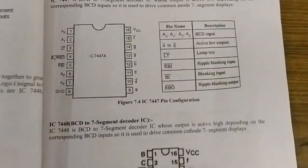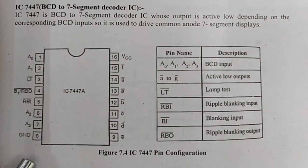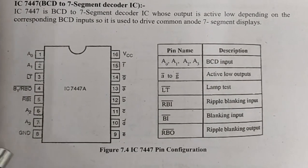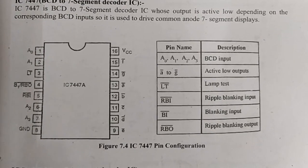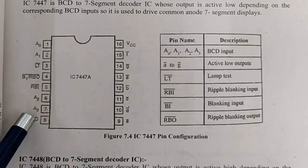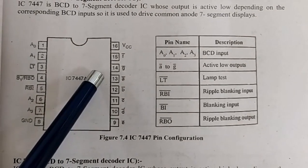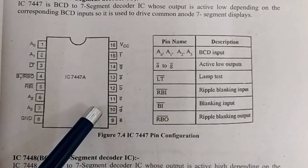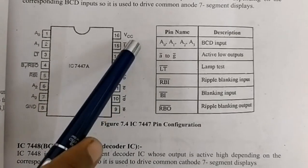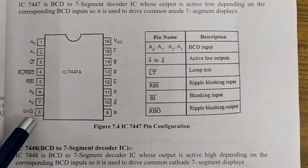The BCD to 7-segment decoder IC used in the trainer kit is IC 7447. It is a 16-pin IC. The 4 input pins where BCD inputs are applied are named A0, A1, A2, and A3. There are 7 output pins named A-bar, B-bar, C-bar, D-bar, E-bar, F-bar, and G-bar, to which a common anode type 7-segment display is connected. Pin 16 is VCC and pin 8 is ground.